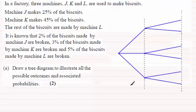The first trial here is all about machine and the second trial here will be about whether the biscuit is okay or broken. So we've got three machines, J, K and L, and then whatever the machine is you've got a probability that the biscuit will either be broken or not broken dependent on the machine.